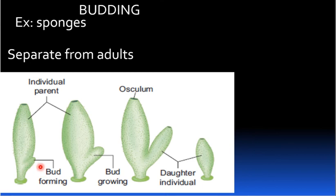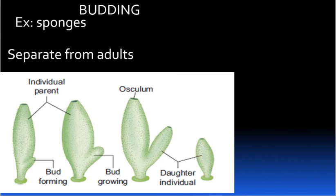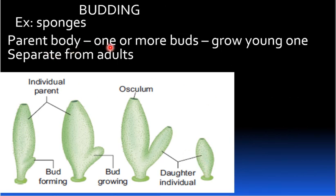Each bud grows into a young one. The bud separates from the parent body and leads a normal life. In sponges, buds grow and separate to form new daughter individuals. Budding is classified into two types: exogenous budding and endogenous budding.